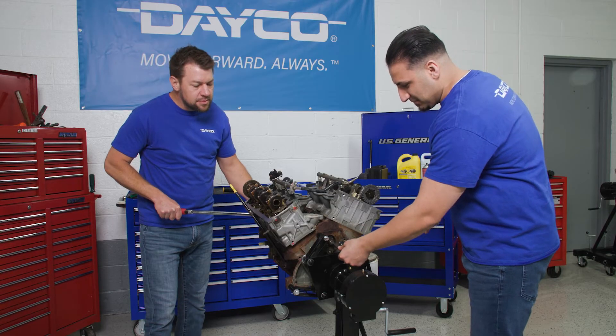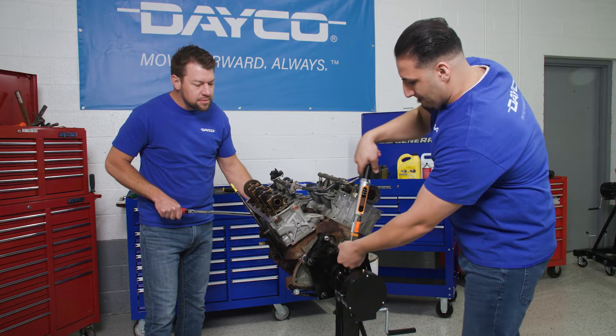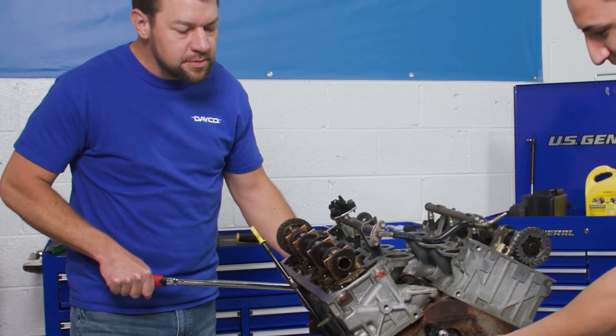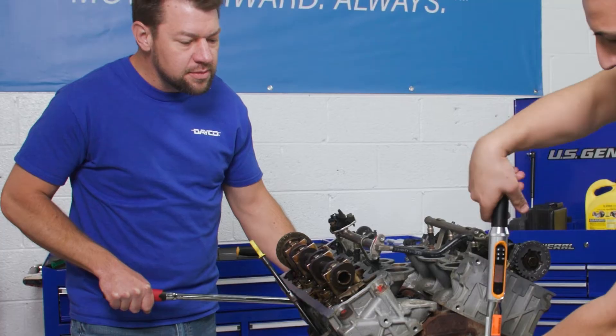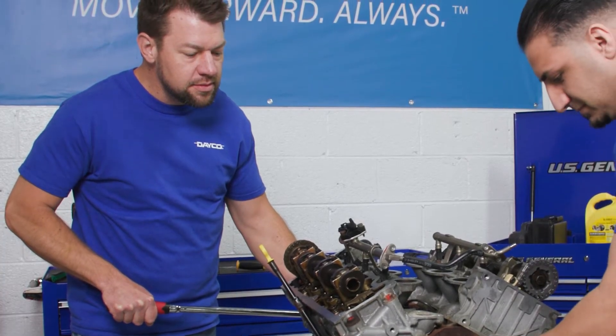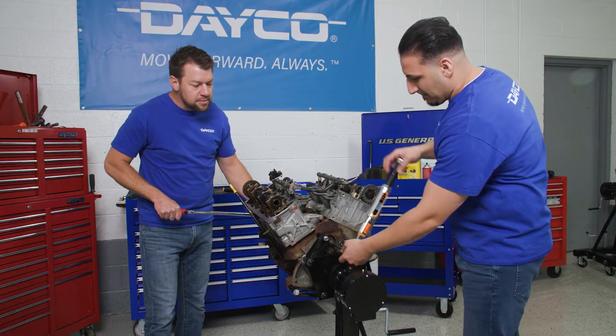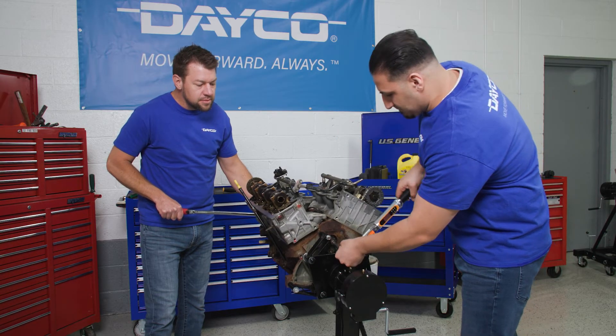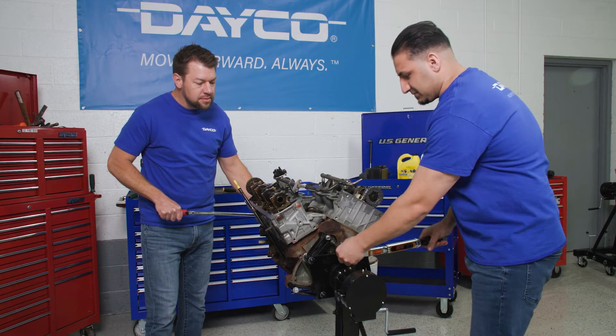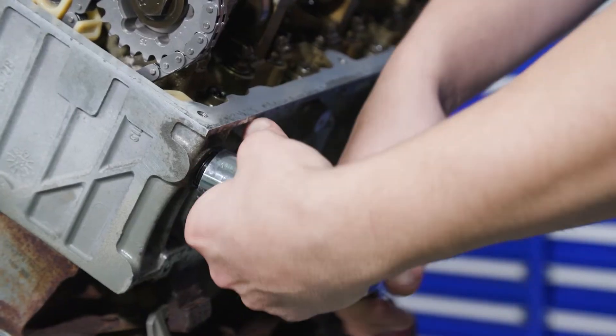These next steps require an extra set of hands. So have someone hold the front jack shaft bolt still while torquing the rear sprocket bolt. Tighten to 15 foot-pounds plus 90 degrees. Note, this is a torque to yield bolt that must be replaced once it's removed. Now remove the tensioner tool.